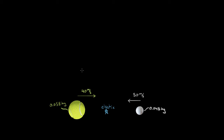The trick to make these calculations go faster for an elastic collision is to use this equation, which says that the initial velocity of one of the objects before the collision plus the final velocity of that same object after the collision should equal the initial velocity of the second object before the collision plus the final velocity of that second object after the collision.